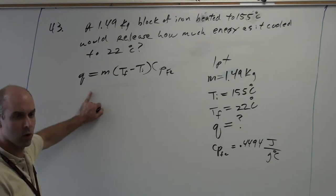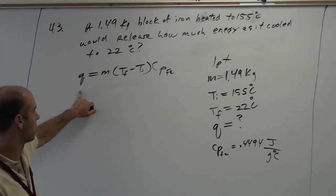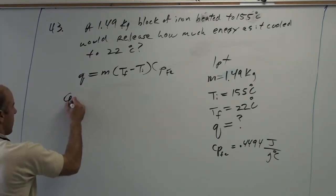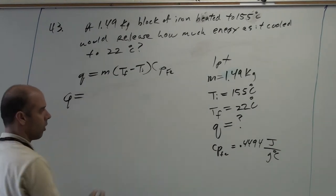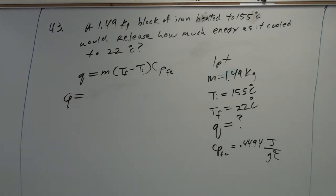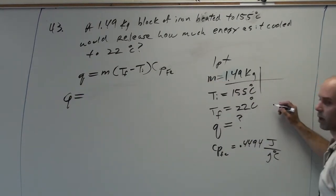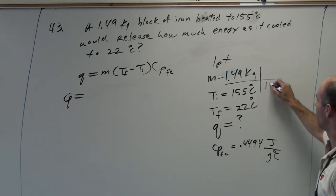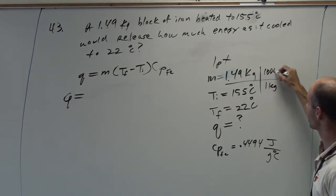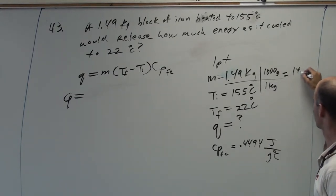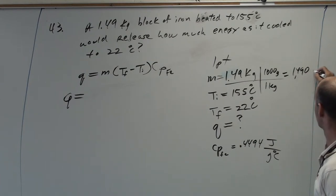Q, we're trying to find. Mass? Uh-oh. What's wrong with the mass? In kilograms. It must be in grams. Do not be fooled. So, little unit analysis here. One kilogram is a thousand grams. So, one thousand four hundred ninety grams.